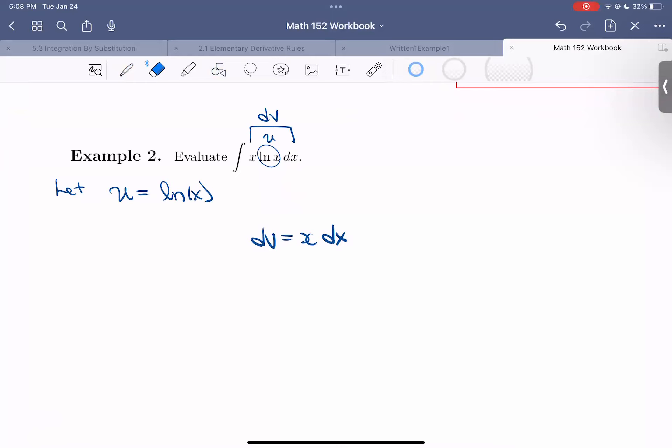All right, so now we need our v and our du. So derivative of ln is 1 over x dx. Our anti-derivative of x is x squared over 2 using that reverse power rule.